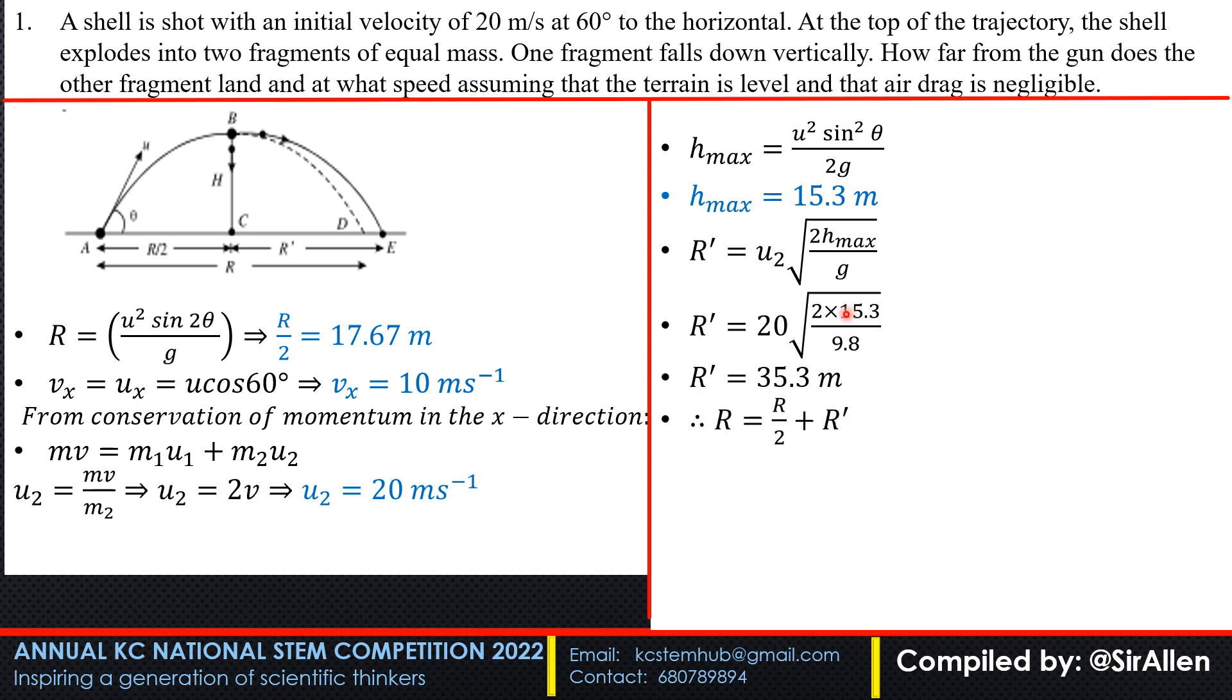We substitute the values and get R prime at 35.3 meters. The total range R is R over 2 plus R prime, which equals 17.67 plus 35.3, giving us 52.97 meters, or 53 meters in two significant figures.